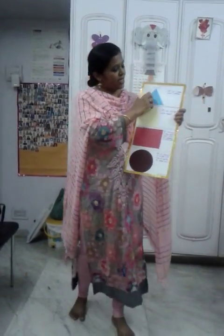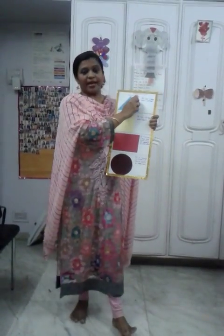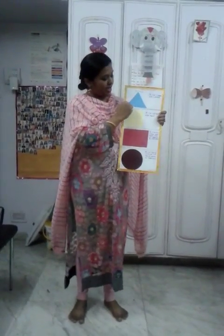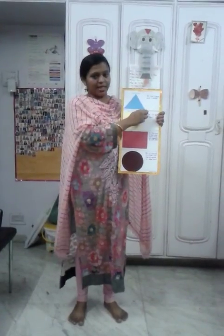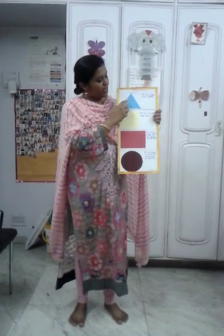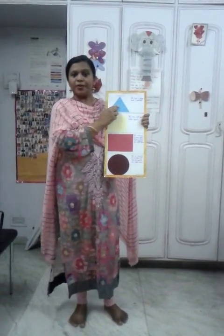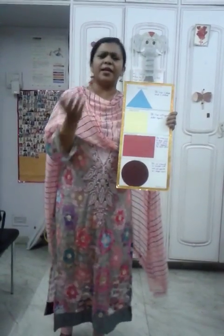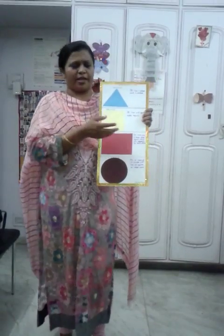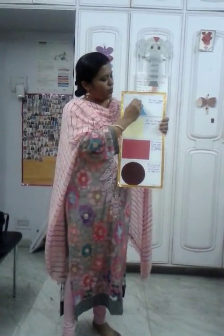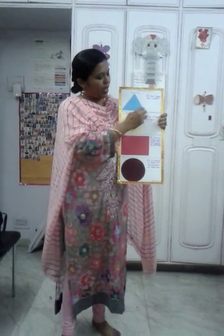This is my triangle. It has a slanting line on both the sides and a flat surface. It is blue in color, but you can have many colors of triangle. It has three edges — can you see one, two and three.